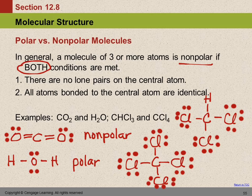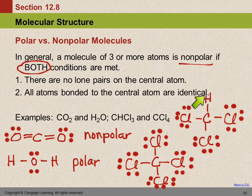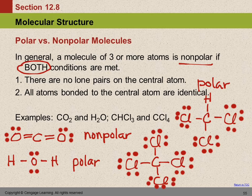The first one we're going to look at is this molecule. Any lone pairs on the central atom? No. Are all the atoms bonded to the central atom the same? No — here's a hydrogen, and hydrogen is different than chlorine. So the second condition is not true, and that is a polar molecule. That's the CHCl₃.